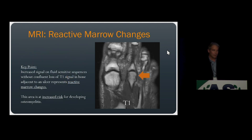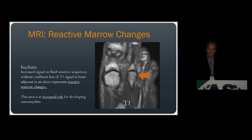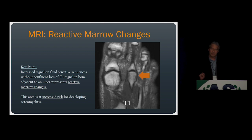The next key point: when you see increased signal on a fluid-sensitive or post-contrast sequence without confluent loss of T1 signal in bone adjacent to an ulcer, this represents reactive marrow changes and not osteomyelitis. It's important to remember that while this area of reactive marrow changes is not osteomyelitis at the time of imaging, it is at increased risk for developing osteomyelitis, so it may require more aggressive conservative management.